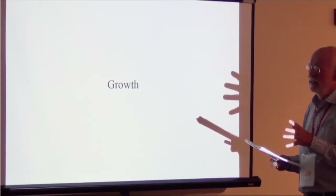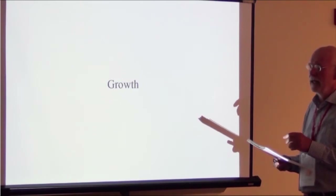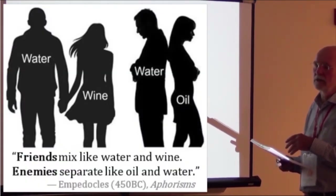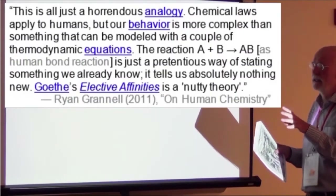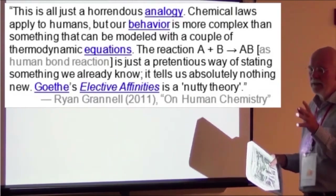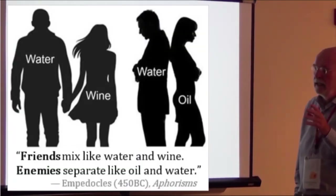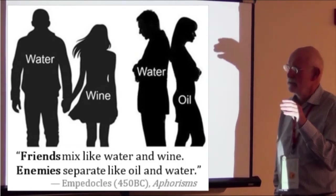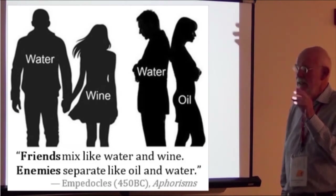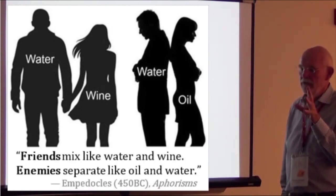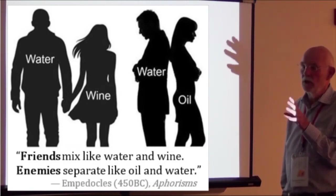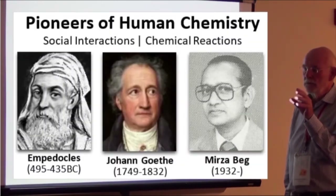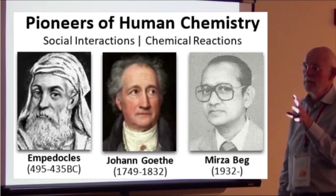I said, well, this is funny that it works so well — but then I realized somebody else had done that 2,000 years ago. That was Empedocles. He did the same thing, because at first many objected and said you can't explain social systems by chemistry. And then I said: wait a minute. Empedocles, around 1450 BC, said people that are friends mix like water and wine, and enemies separate like water and oil. So he was the first one to explain social interactions by chemical interactions — between water and oil, and water and alcohol.